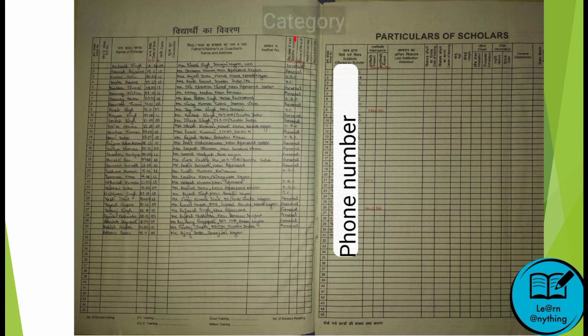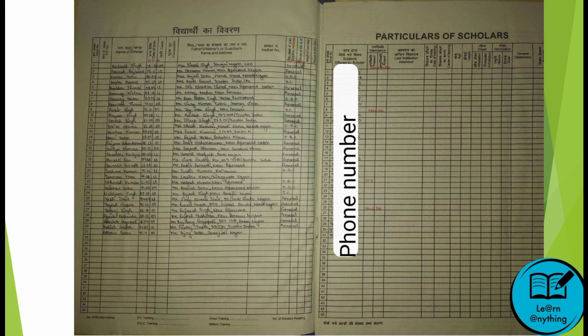The next column is category. You will mention the child's category — General, SC, OBC. If there is no category for the child, you can add a dash. Then the next column is phone number, where you will mention every child's household phone number.